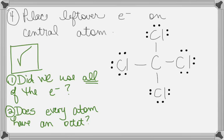If the answer to both questions is yes, then you have your Lewis structure. But both have to have an answer of yes. If the answer to one is no, then you have to fix it. That's where rule five comes into play.